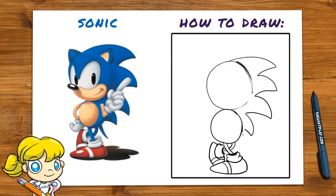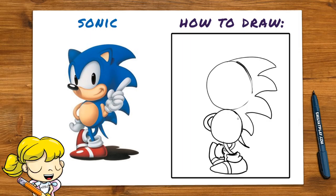He has a couple of those rounded rectangles again. He has one more little tail behind him at the bottom, so let's draw that behind him. Now let's do his arms — he's got a little spaghetti arm on the left-hand side. Let's start here and draw like the letter C.